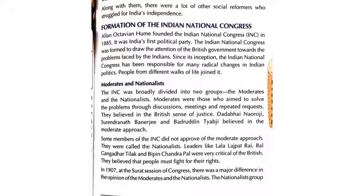When was it formed? It was formed in 1885. These questions are very important — you have to remember them. The Indian National Congress was formed in 1885 by Allan Octavian Hume. It was India's first political party. The Indian National Congress was formed to draw the attention of the British government towards the problems faced by the Indians. Since its inception, the Indian National Congress has been responsible for many radical changes in Indian politics.